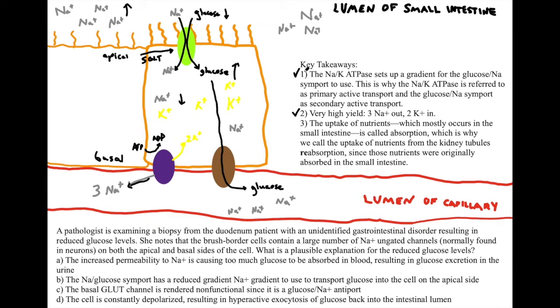The reason it is called secondary active transport is because it is taking advantage of the gradient that the primary active transporter, in this case our sodium potassium pump, has made in order to fuel an unfavorable reaction. This reaction is driving glucose against its gradient to a place of higher concentration within this epithelial cell. That is a very high yield concept. The uptake of nutrients, which mostly occurs in our small intestine, is simply called absorption. We are absorbing into our blood. That's why we call the uptake of nutrients from our kidney tubules—distal tubule, proximal tubule, and mostly the collecting duct—reabsorption, since those nutrients were originally absorbed in the small intestine.